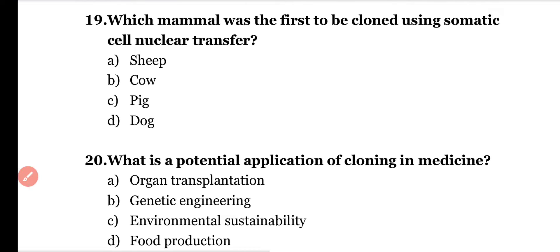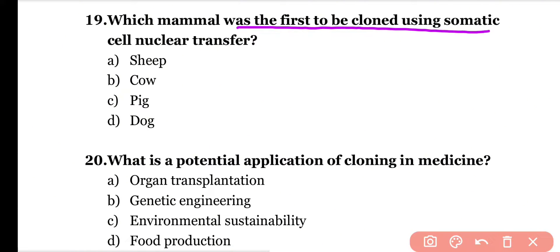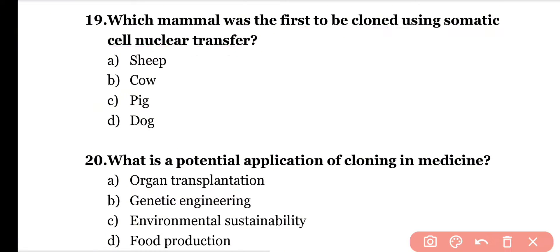Question number nineteen: Which mammal was the first to be cloned using somatic cell nuclear transfer? Options: sheep, cow, pig, dog. Correct answer is option A. Sheep was the first mammal that was cloned using the somatic cell nuclear transfer process.